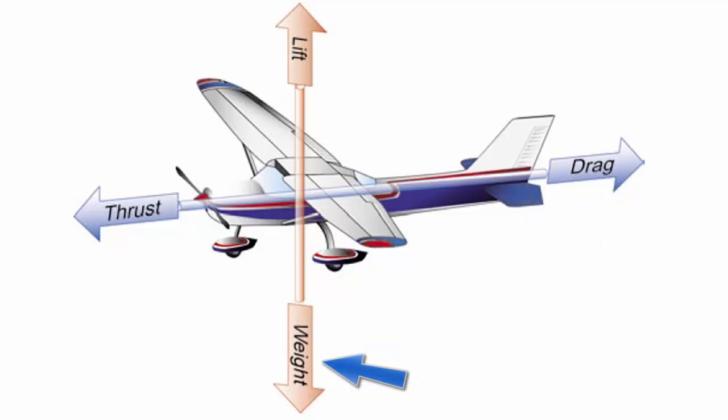Weight is the combined load of the airplane structure, the crew, fuel, and cargo or baggage. Weight pulls the airplane downward because of the force of gravity. Weight opposes lift and acts vertically downward through the airplane's center of gravity.